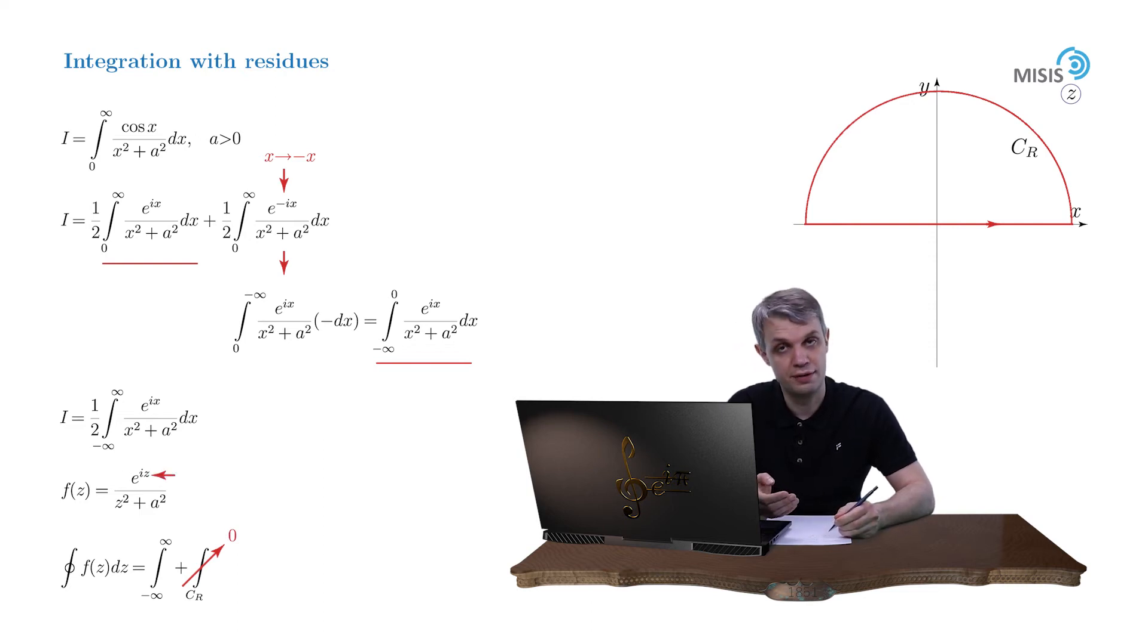Because our exponential function has a correct increment, lambda equals 1, and our pre-exponential function g of z equaling 1 over z squared plus a squared decays uniformly with respect to its argument as z tends to infinity. And therefore our closed contour integral is equal to our original integral.